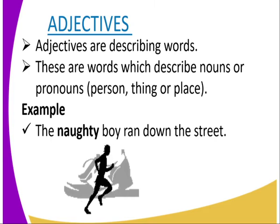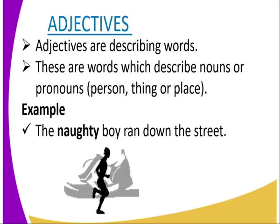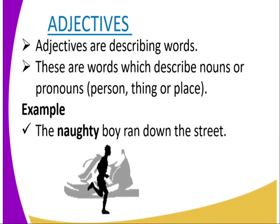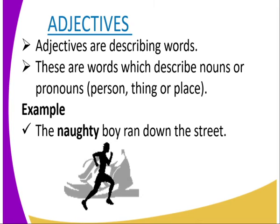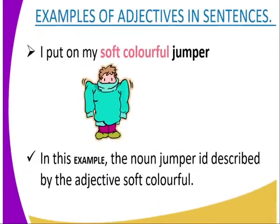They describe a person, a thing, or a place. For example: 'The naughty boy ran down the street.' As you can see in the picture, 'naughty' is an adjective which tells us more about the noun 'boy.' Another example: 'I put on my soft, colorful jumper' — 'soft' and 'colorful' are adjectives.